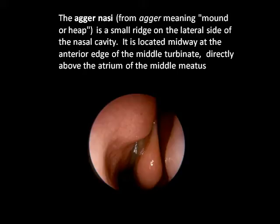'Agar' means mound, 'nasi' means nose. It is located midway at the anterior edge of the middle turbinate — directly above the atrium of the middle turbinate. This is the location of the agar nasi.